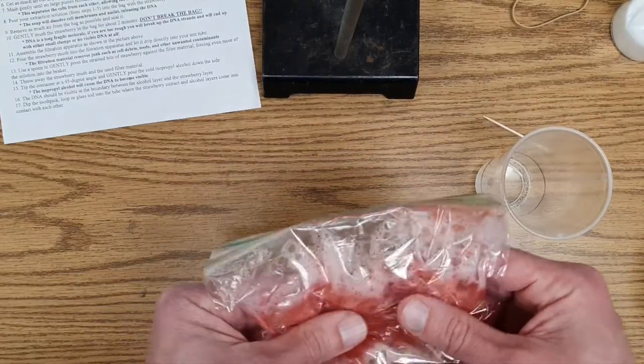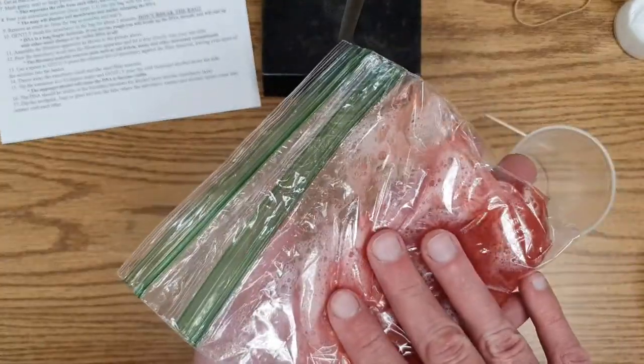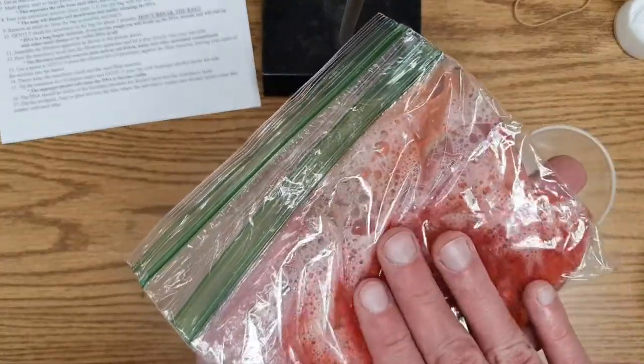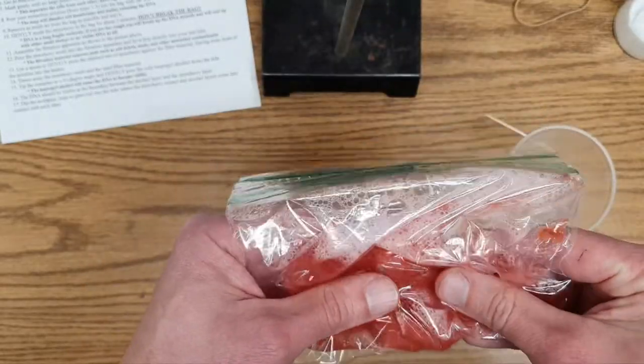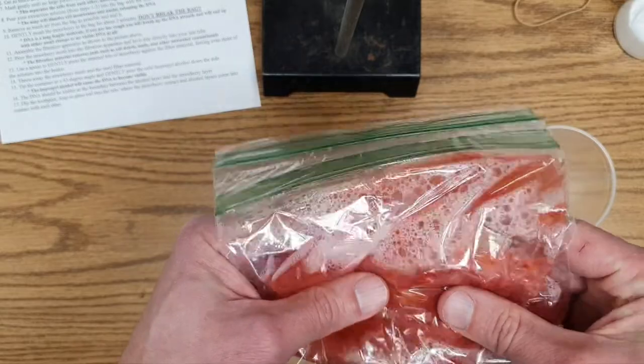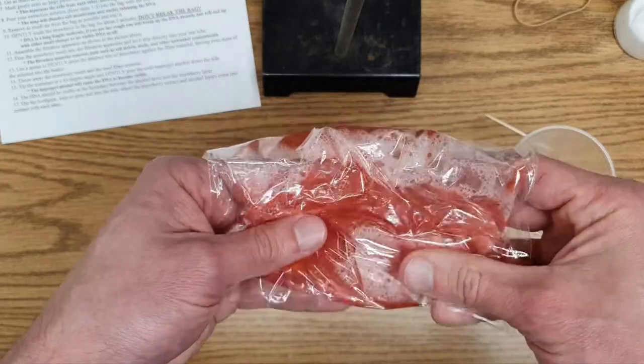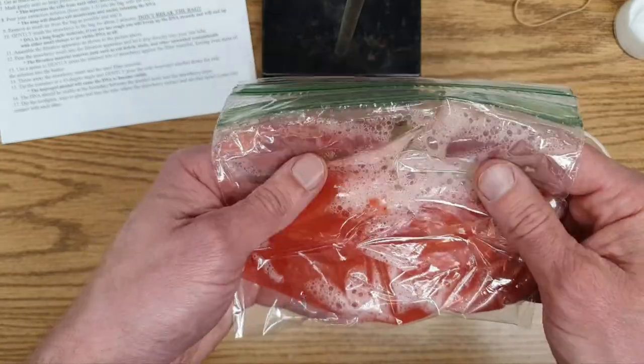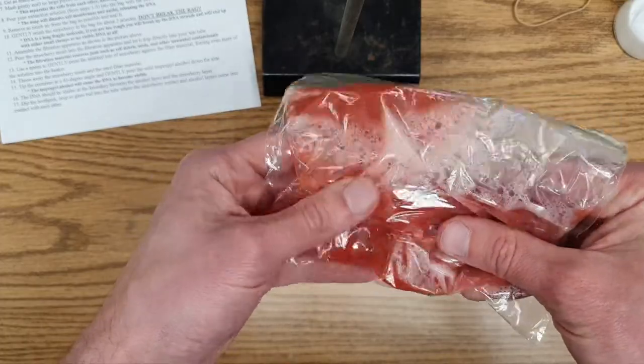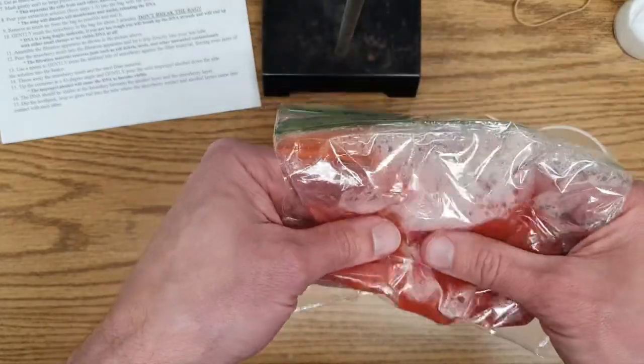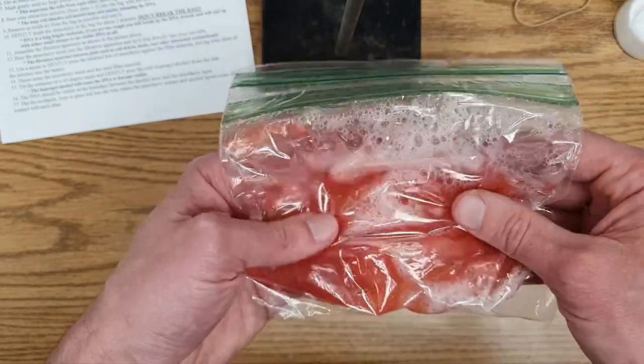You're going to want to give this about two minutes of gentle mushing. This is already kind of a lot of foam. This is more than we should have. You don't want to make a bad situation worse. So gently mush. Just giving a good mix for a good couple minutes. With those couple minutes, that'll be plenty of time for the soap to do its work, breaking down the cell membranes for the salt to do its work, stabilizing the DNA. Be gentle, but keep it moving. And most importantly, give it a decent amount of time.